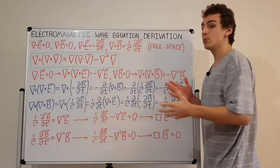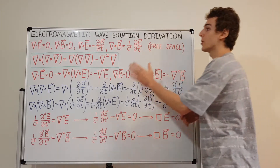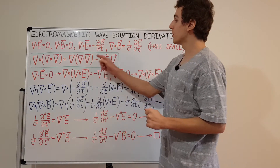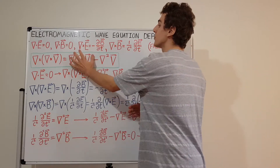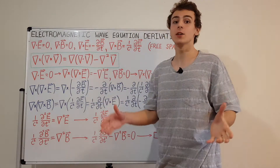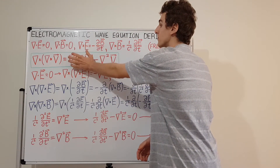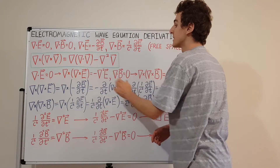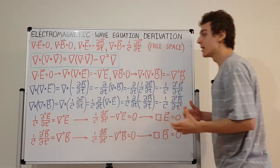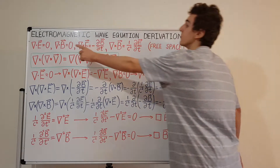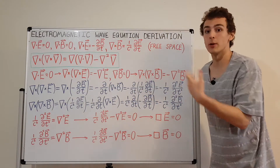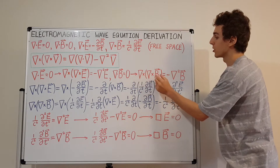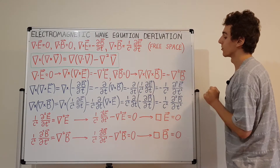We have two vector fields: the electric field and the magnetic field. Let's substitute those into the vector identity instead of a general vector V. Starting with the electric field: the divergence of the electric field in a vacuum is zero, so that term vanishes, meaning the curl of the curl of the electric field equals minus the Laplacian of the electric field. The same condition holds for the magnetic field, because the divergence of the magnetic field is zero — in a vacuum and in general, since there are no magnetic monopoles. So the curl of the curl of the magnetic field is also minus the Laplacian of the magnetic field.